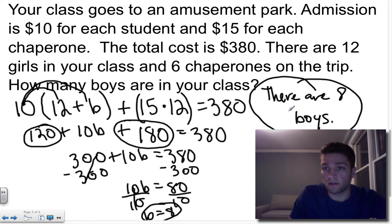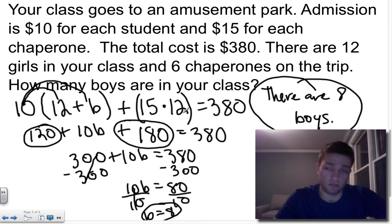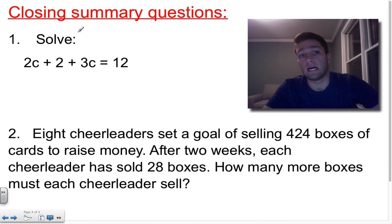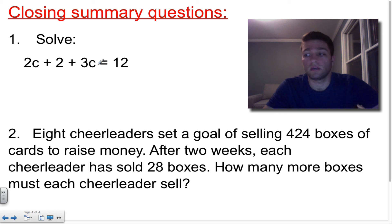To double-check: plug B = 8 back in. 8 + 12 = 20 students; 10 times 20 is 200, plus 180 from the chaperones, equals 380. That's correct. This is your last slide — your closing summary questions. Pause the video, write them down, and try them. If you need clarification or want to check your answers, shoot me a quick email. Otherwise, bring your work and questions to class tomorrow. Hopefully this helped you with chapter 2 section 3: solving multi-step equations.